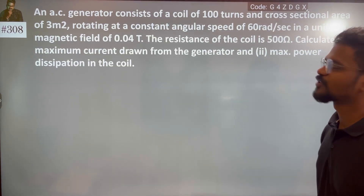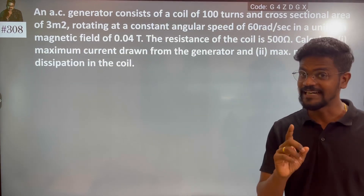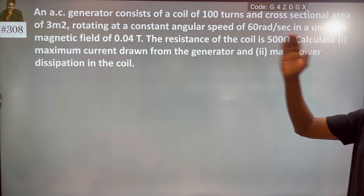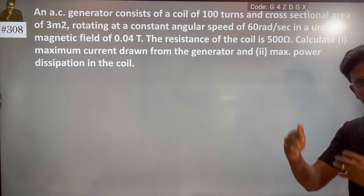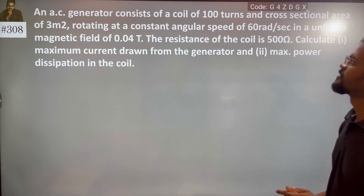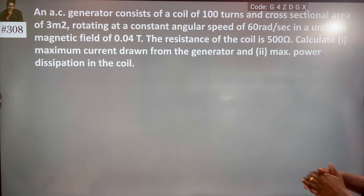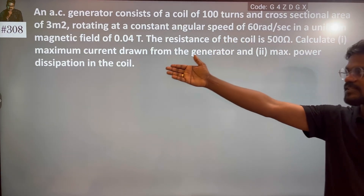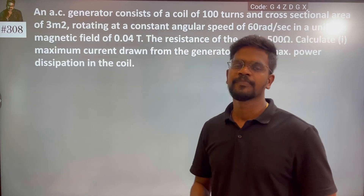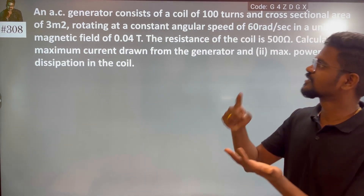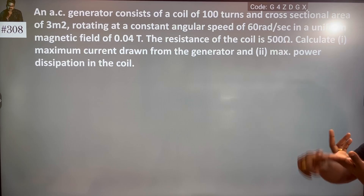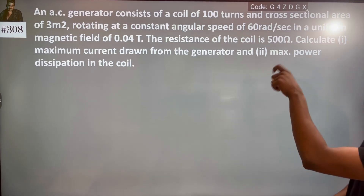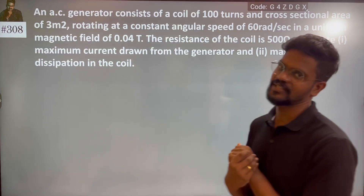An AC generator consists of a coil of 100 turns, cross-sectional area, rotating at angular speed omega which is 60 radians per second, and uniform magnetic field is 0.04 tesla. We have a number of turns, area, angular speed omega, and magnetic field is also given, and the resistance of the coil is 500 ohm.